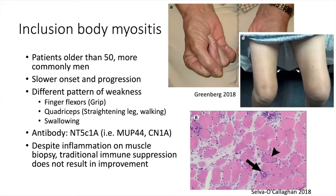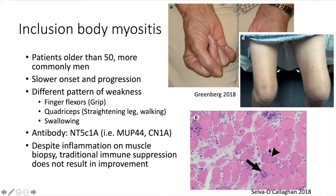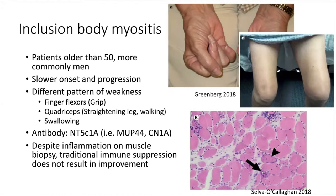Recently, in around 2013, an antibody was discovered that seems to be associated with IBM — Nt5C1A, also known as MUP44 or CN1A. It's an antibody that seems to be present in a significant proportion of IBM patients, though it is not specific, so you may have this antibody and not have IBM. And interestingly, despite all that inflammation on the muscle biopsy, patients with IBM do not respond to traditional immunosuppression the way other inflammatory or immune-mediated myopathies will. That's why one wonders if IBM should be separated from the others in almost its own category.